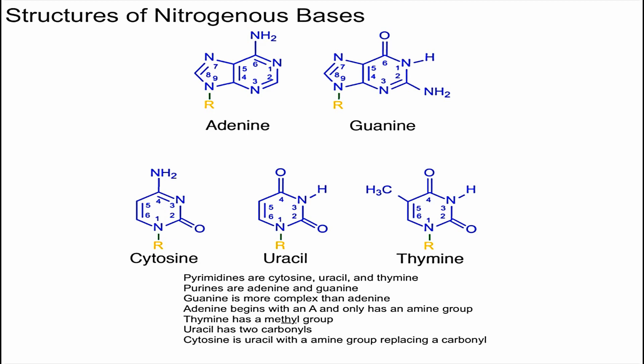To begin, we should separate the pyrimidines from the purines. The pyrimidines are cytosine, uracil, and thymine, and they all have one ring. How I like to remember this is to think that pyrimidines are a single ring — and the mnemonic is 'CUT': the C is cytosine, the U is uracil, and the T is thymine. That's how you can remember which ones are pyrimidines.